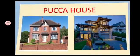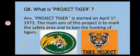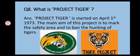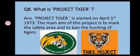Our next question is: what is Project Tiger? As we have read in the chapter, Project Tiger was started on April 1st, 1973. The main aim of this project is to mark safety areas and to ban the hunting of tigers.